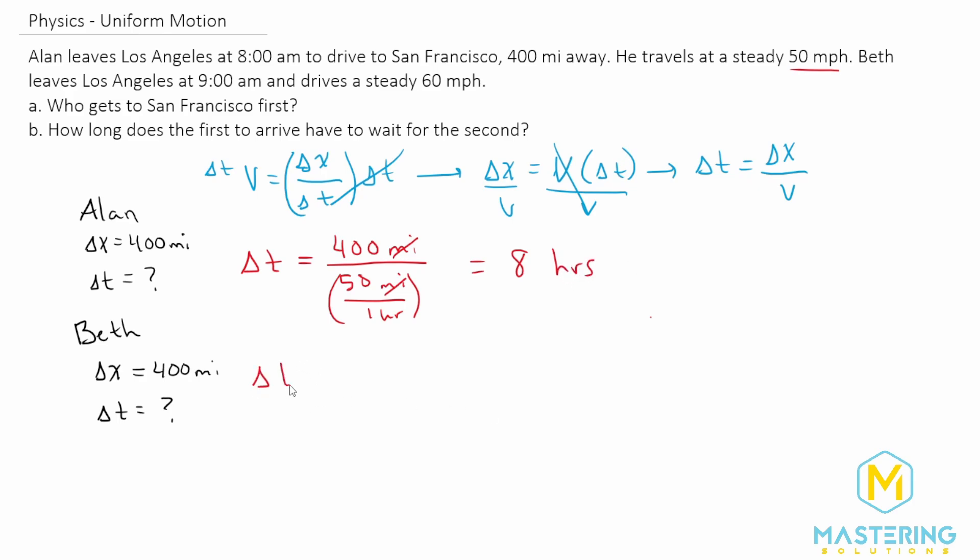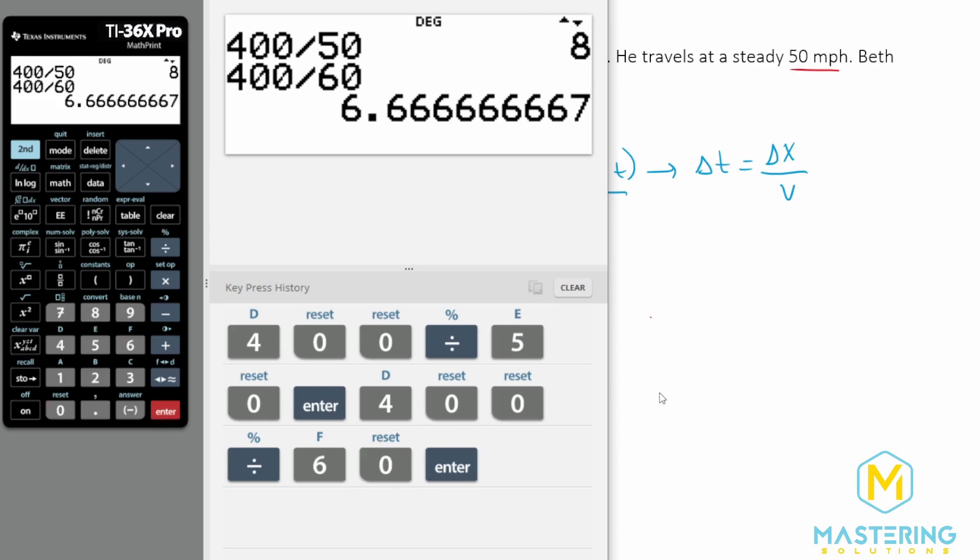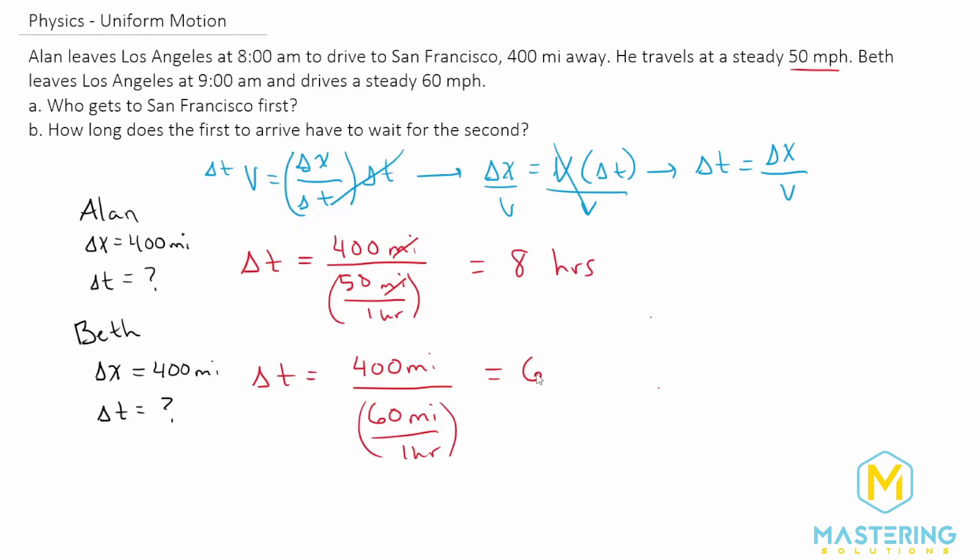Now let's do the same thing for Beth. It's the same distance, so 400 miles. But she's going 60 miles per hour. 400 divided by 60 gives us 6.67 hours.